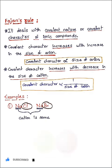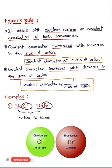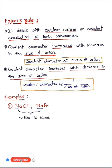The rule says that if a compound is to be covalent, there must be large anion and small cation present in that compound. So as per our Fajan's rule, NaBr is more covalent.